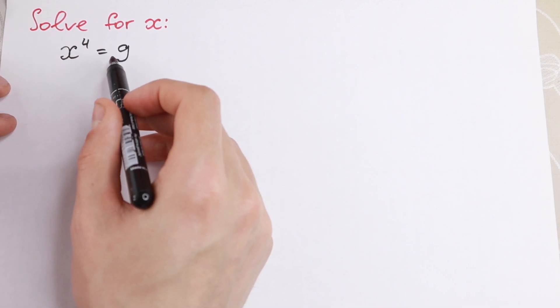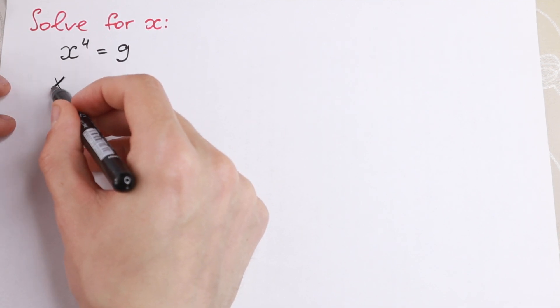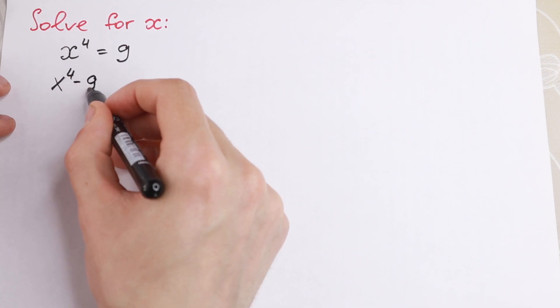How can we do this? Take a look. If we bring this 9 on the left we will have x to the fourth power minus 9 equal to 0.